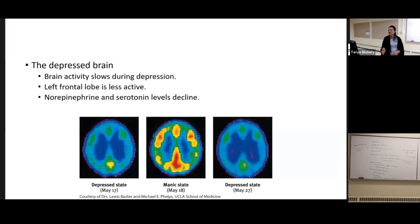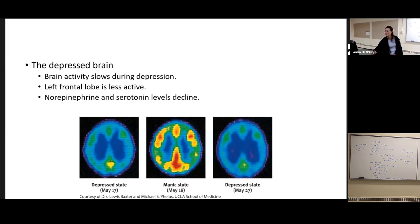While we know that every thought or feeling comes with some kind of biological event, brain activity does differ in depressed people — you can see it's slowed, the left frontal lobe seems less active, and there are some changes in neurotransmitter levels. So we could take a biological lens to look at depression and to treat it, but it might not be the whole story.